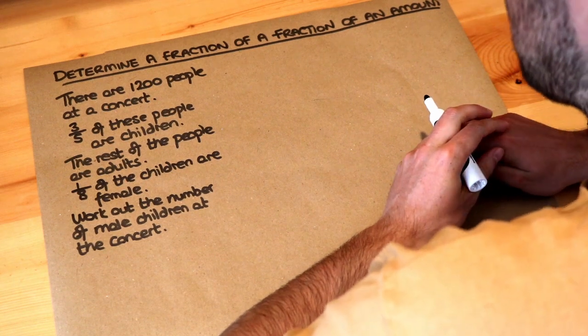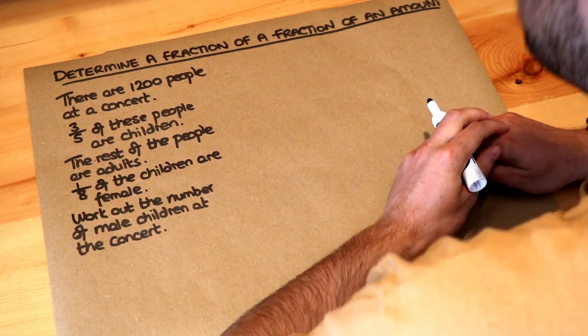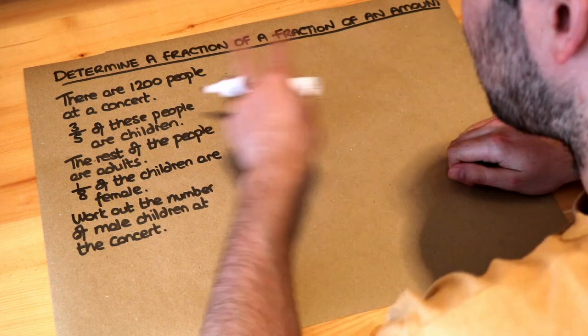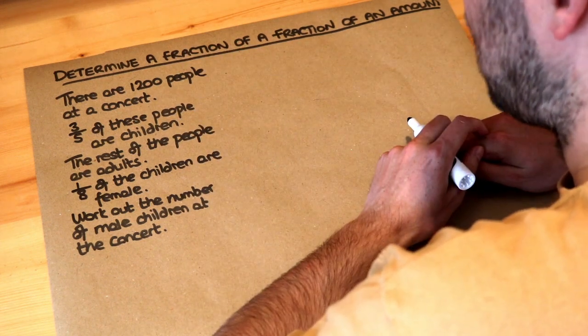Hello and welcome to this Dr Ross video on determining a fraction of a fraction of an amount. Let's read the question. There are 1,200 people at a concert,